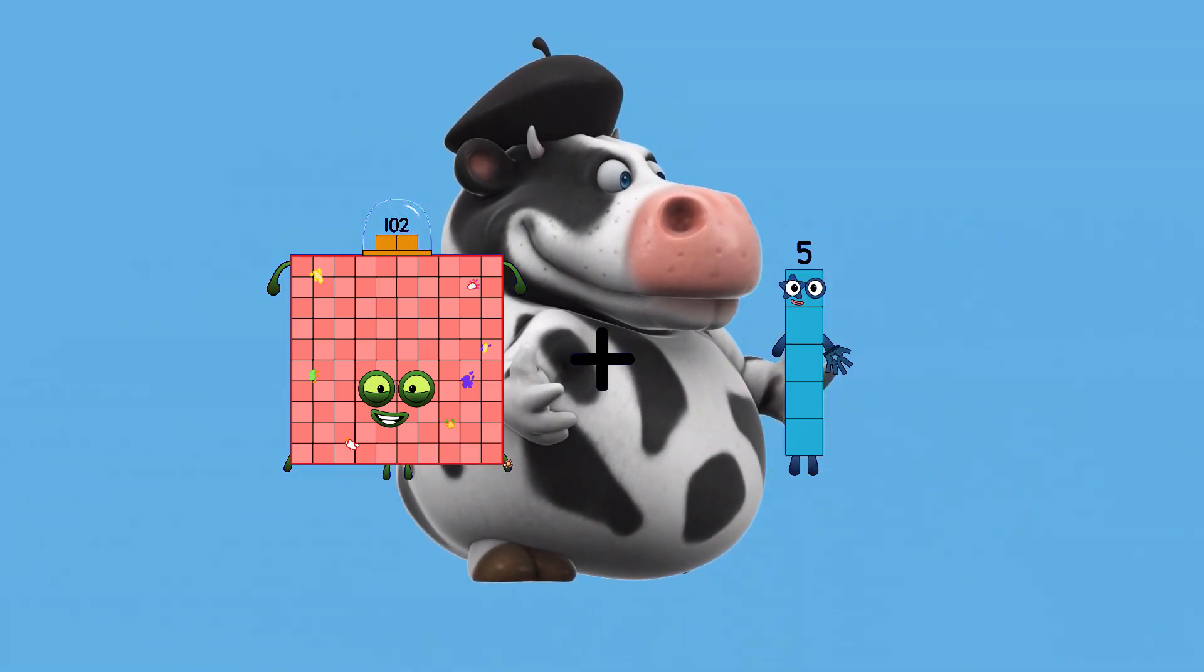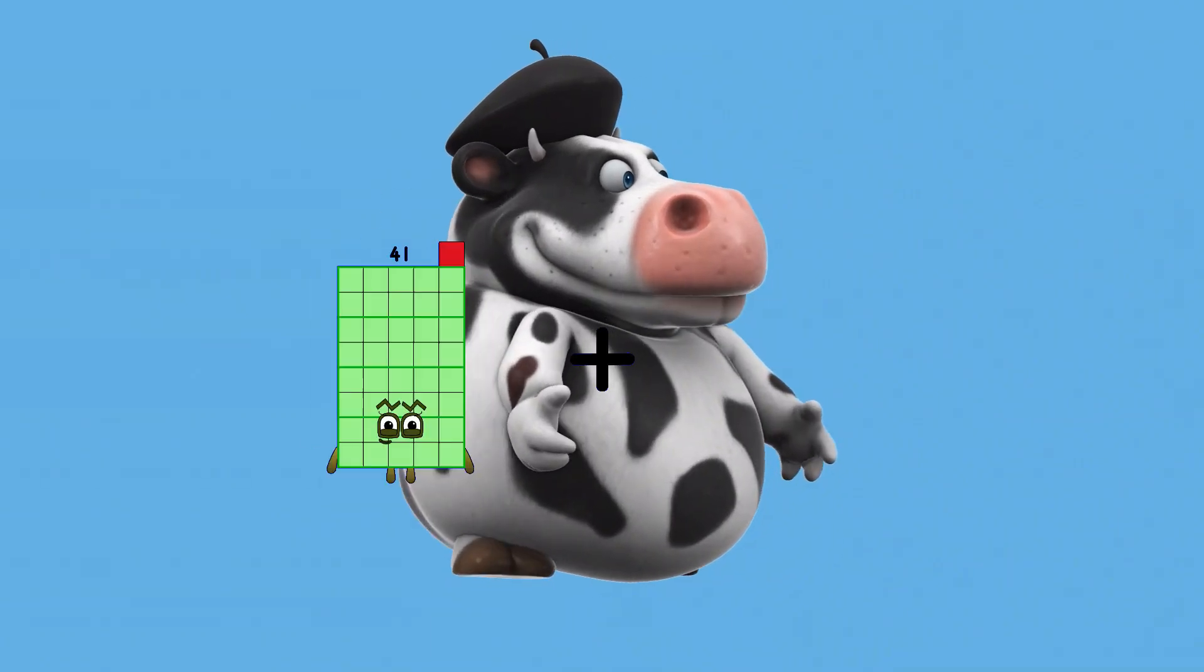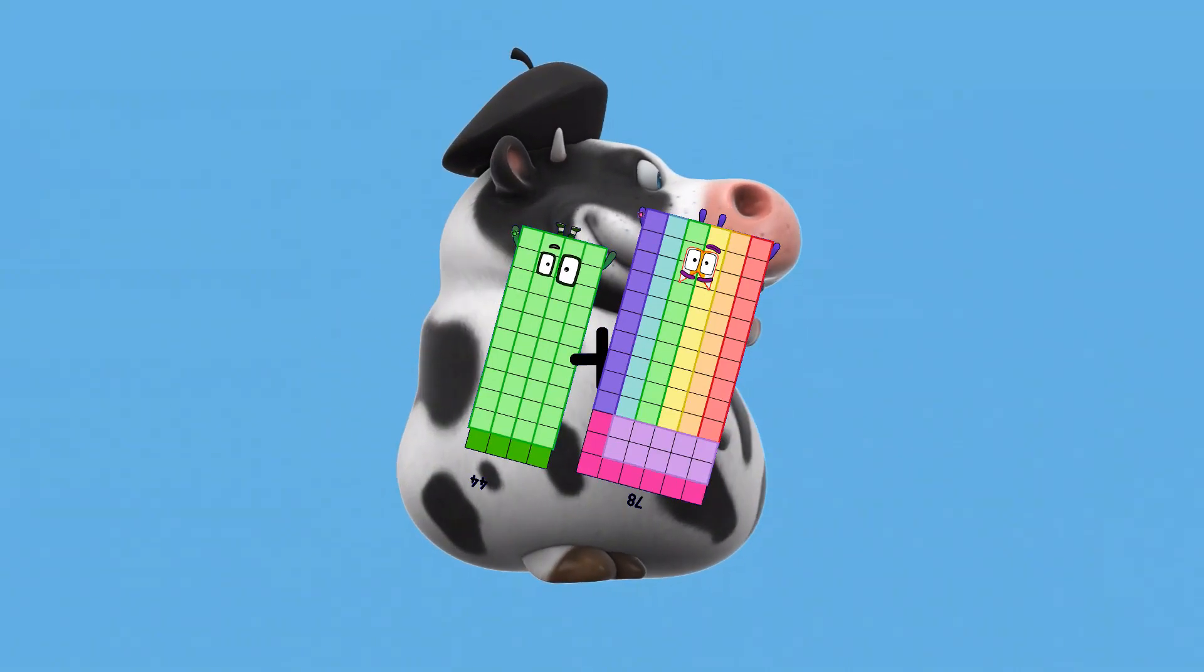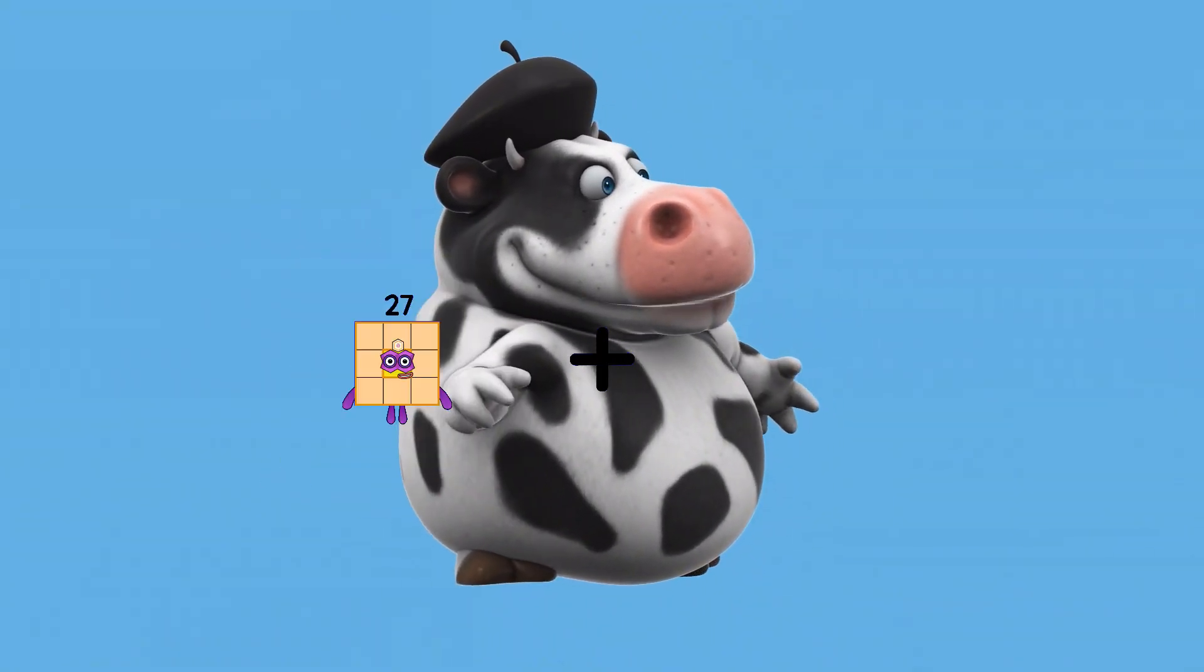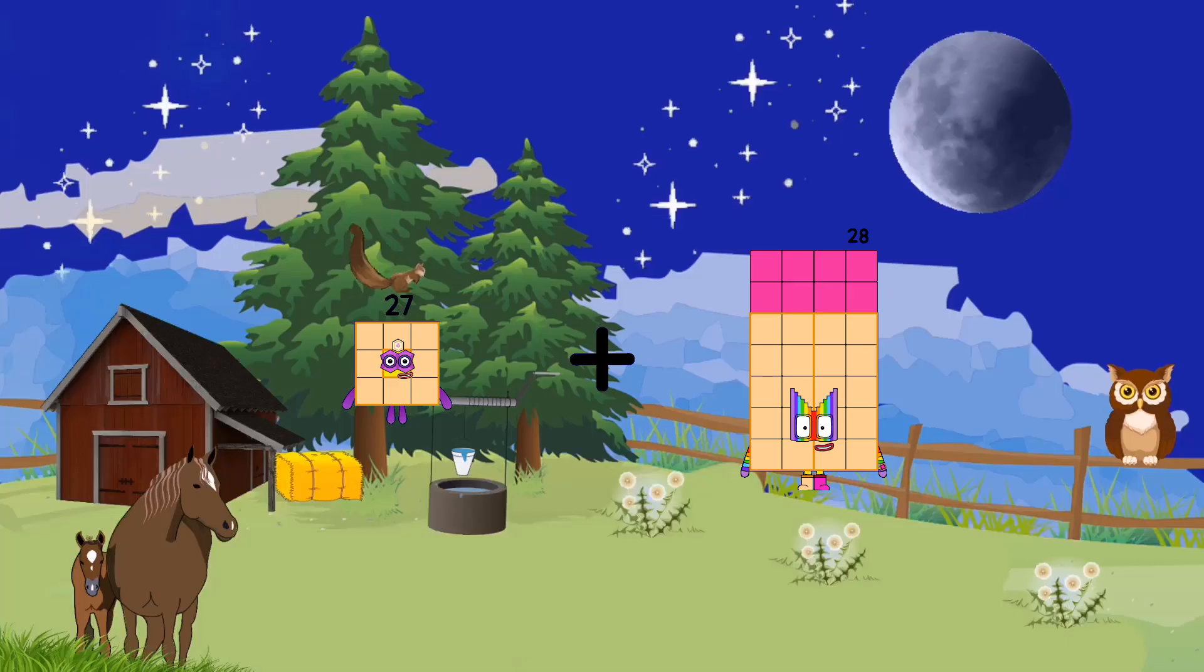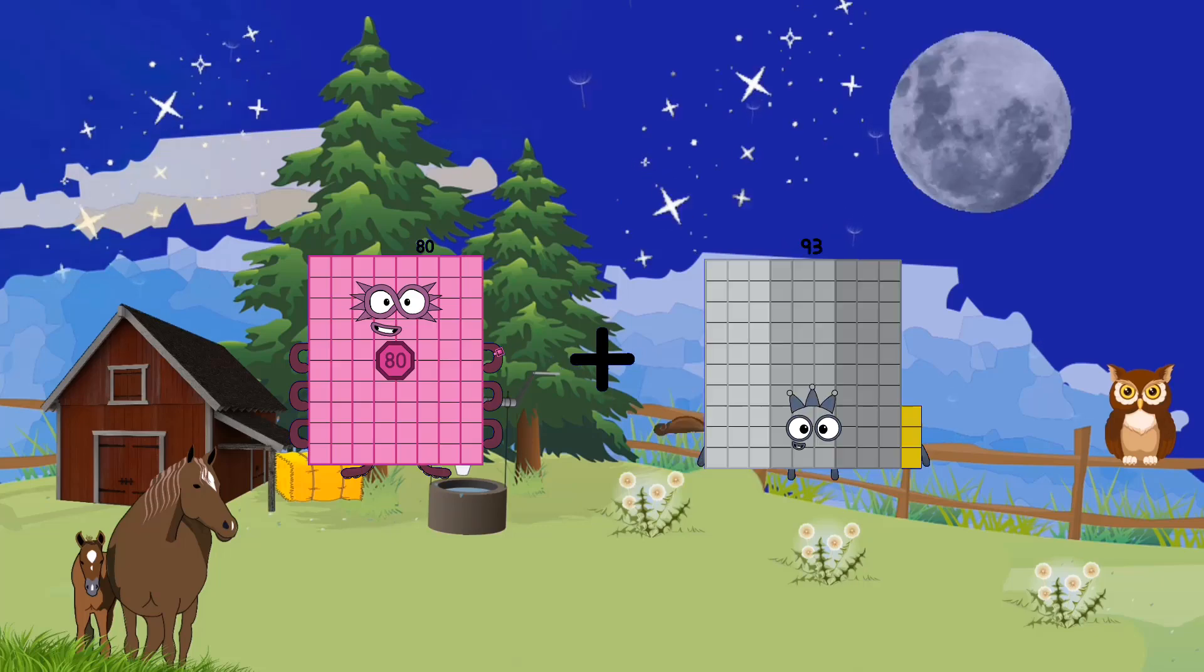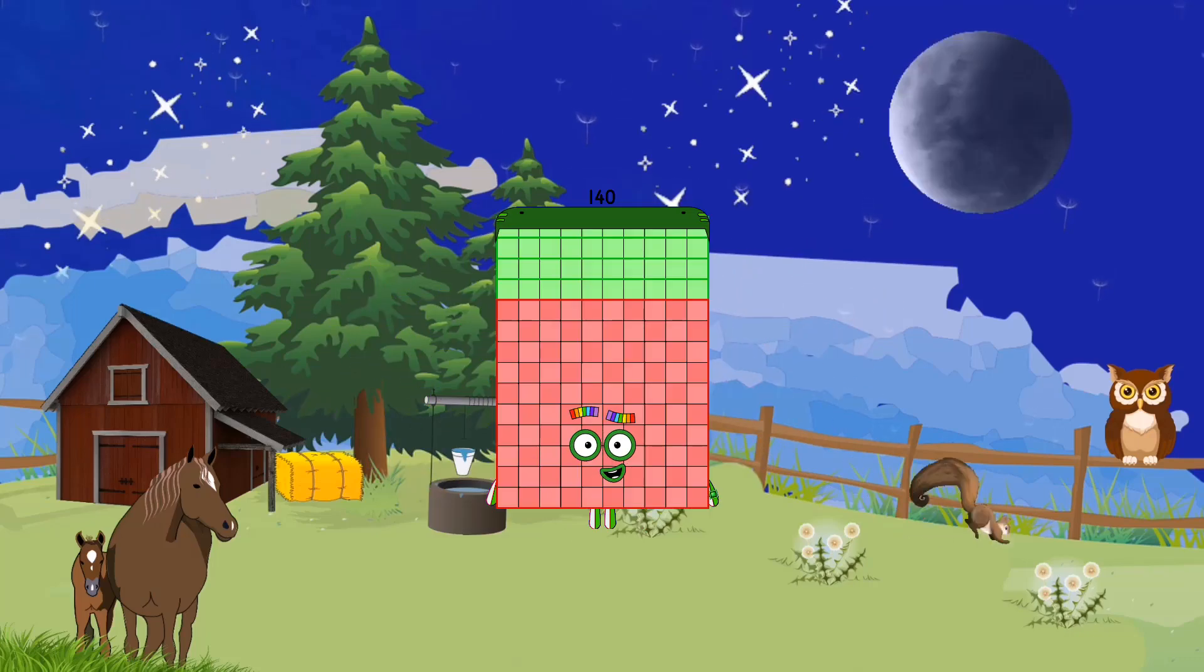102 plus 5 equals 107. 44 plus 78 equals 122. 27 plus 28 equals 55. 80 plus 60 equals 140.